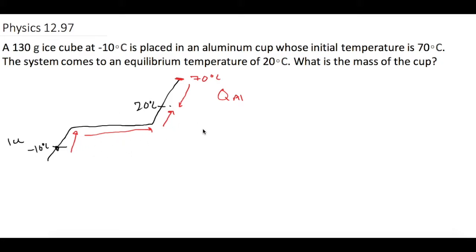So in other words, we'll have an mc∆T of the ice, not liquid water, but frozen ice. And then we're going to take the mass of the ice times the latent heat of fusion. And then we're going to take another mc∆T for the water up to 20°C, and then we're going to have an mc∆T for the aluminum. So we want to find the mass of the aluminum right here.